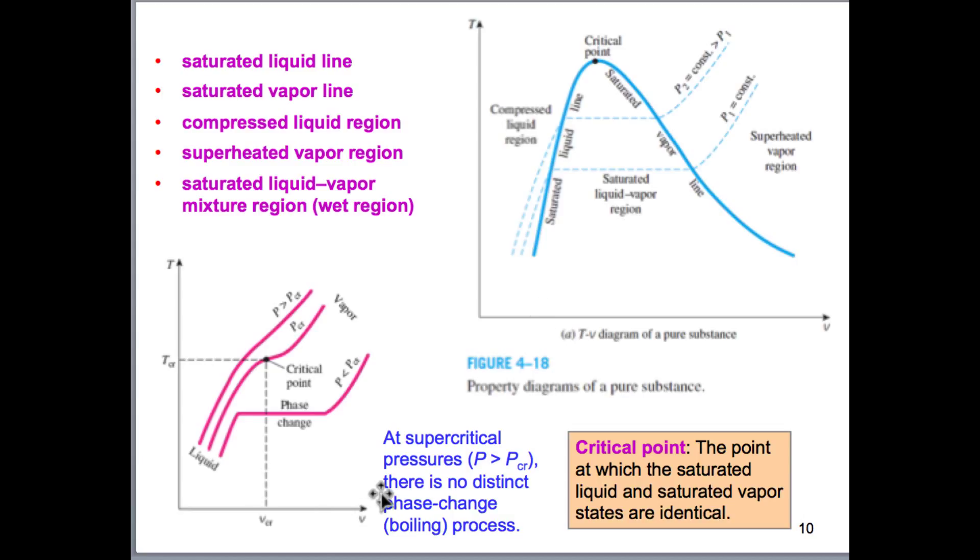If we increase our pressure past the point, or past the critical pressure, we'll notice that there's no distinct phase change region. So here's our typically expected graph, where we have a latent heat of vaporization. So this middle part here, that's flat, that doesn't change temperature, despite increasing the amount of energy in our system.